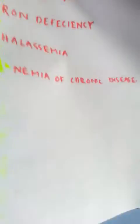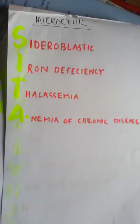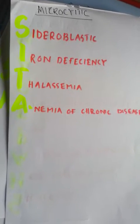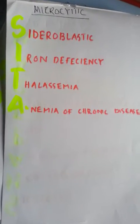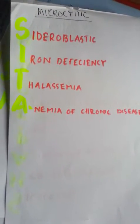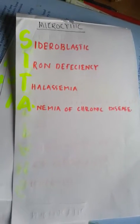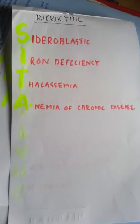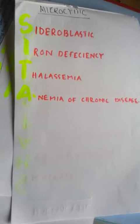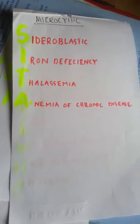First is SITA — SITA stands for microcytic anemias. Expanding it: S is for Sideroblastic anemia, I is for Iron deficiency, T is for Thalassemia, A is for Anemia of chronic disease. So SITA covers microcytic anemias.